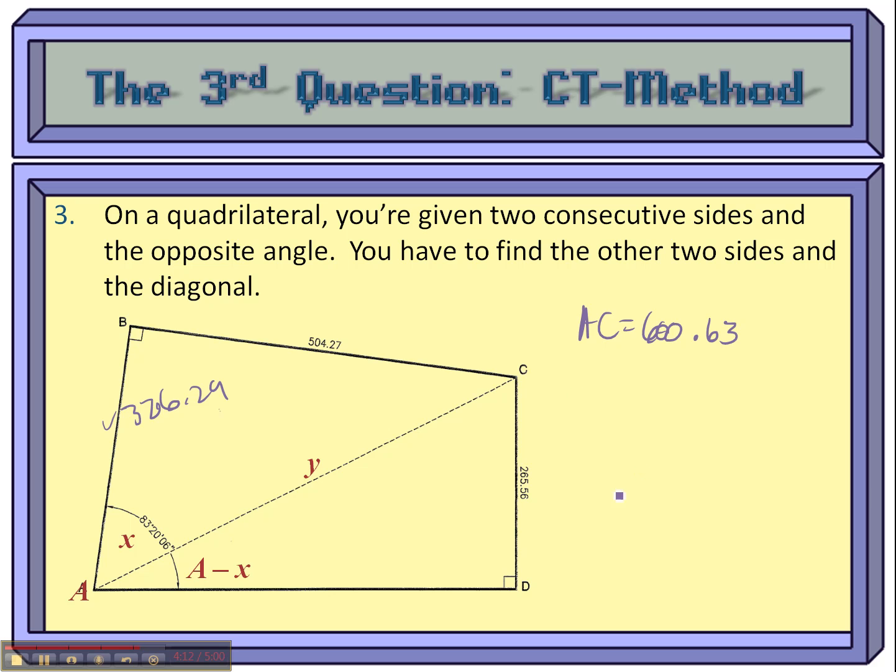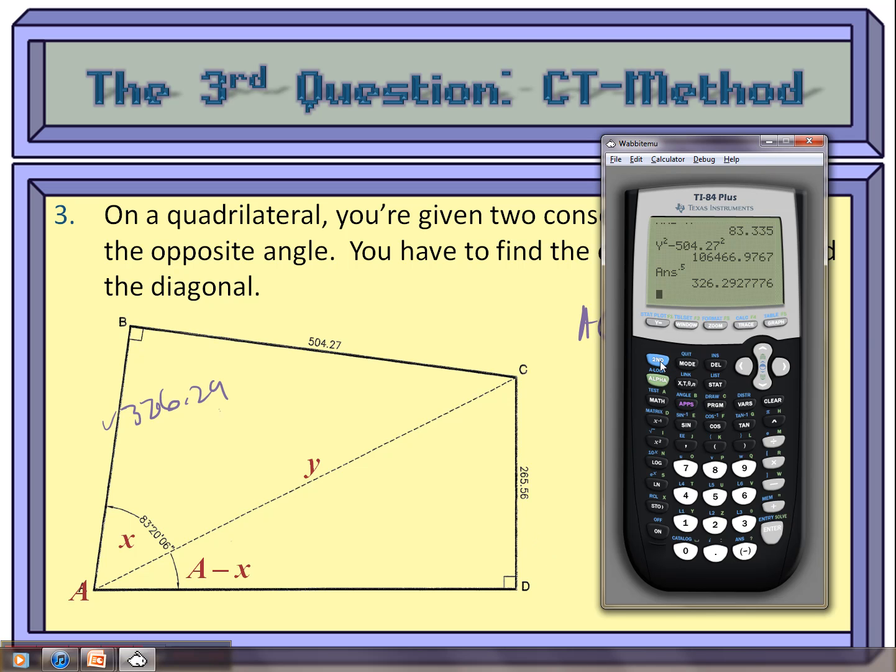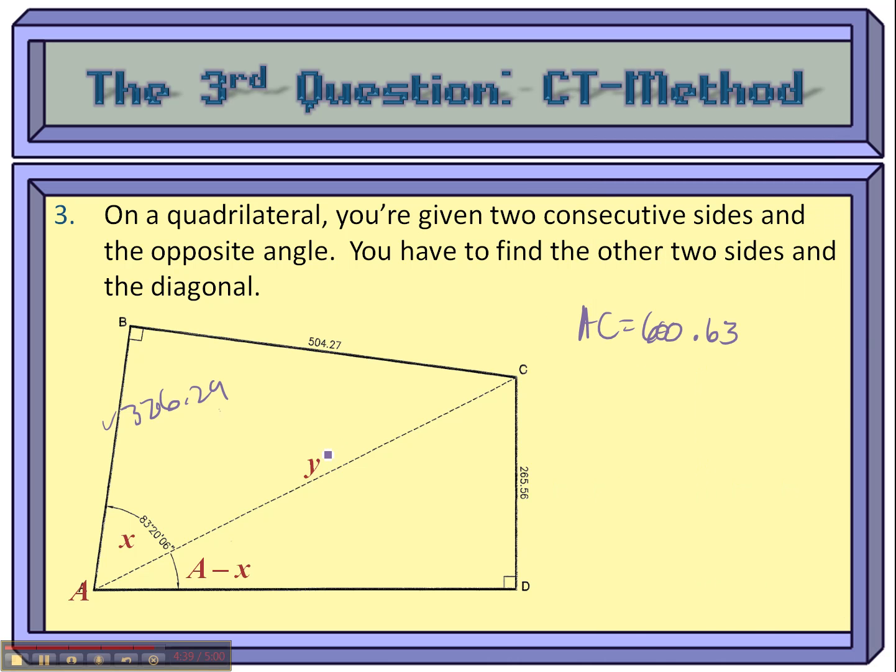And then finally do the same thing for the bottom, AD. So alpha Y squared minus 265.56 squared, and raise that to the half power, and we got 538.73. And there you have it in just a few minutes to get yourself all of question number three answered correctly.